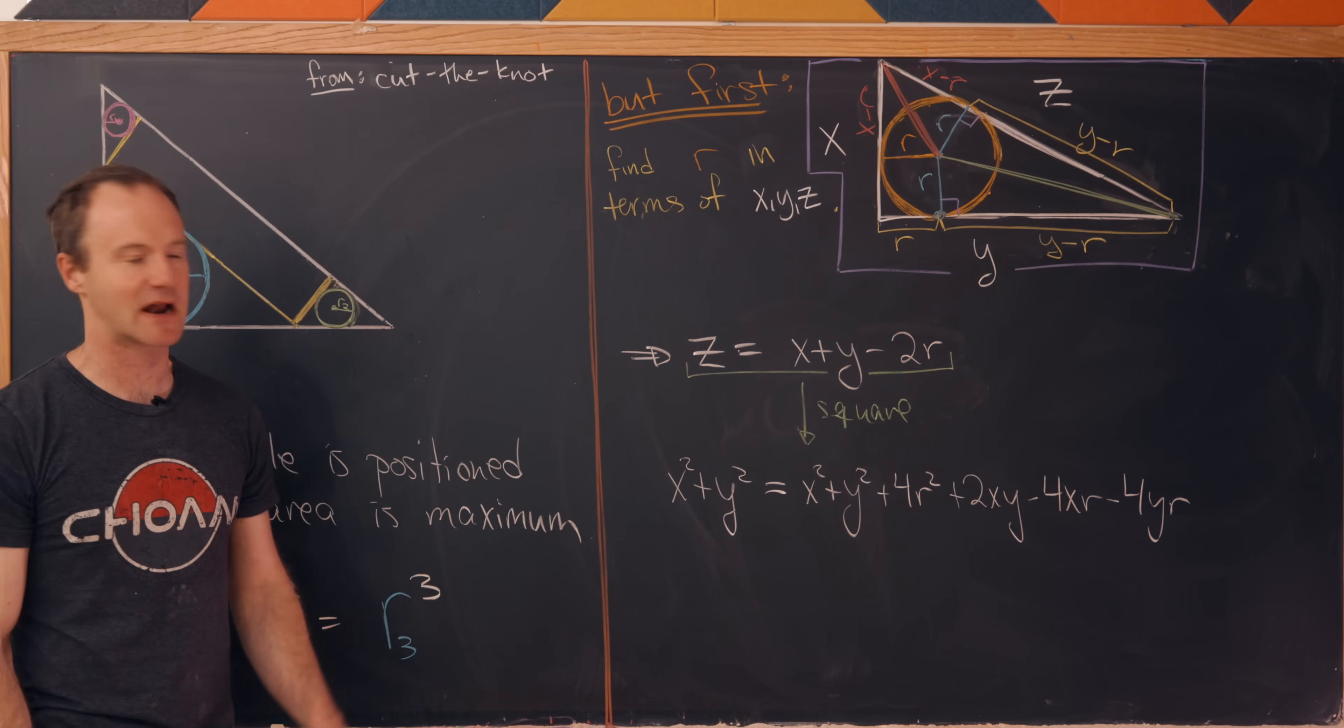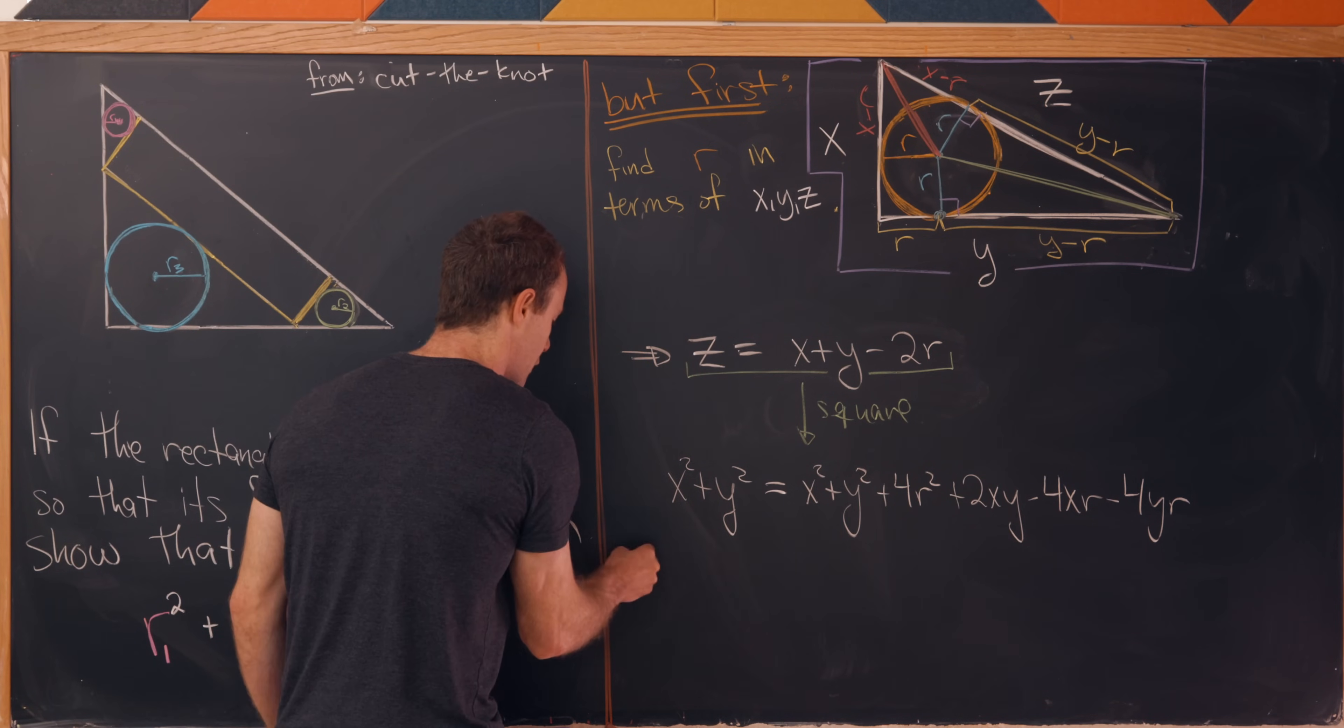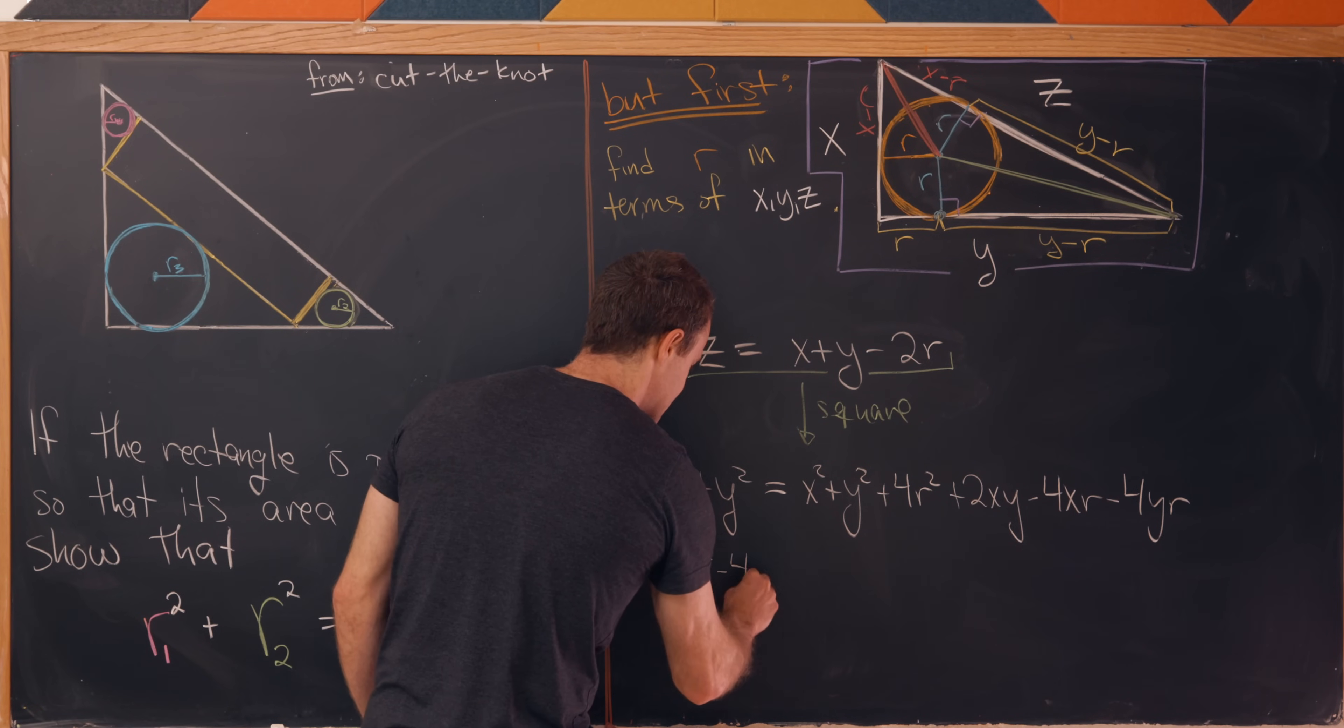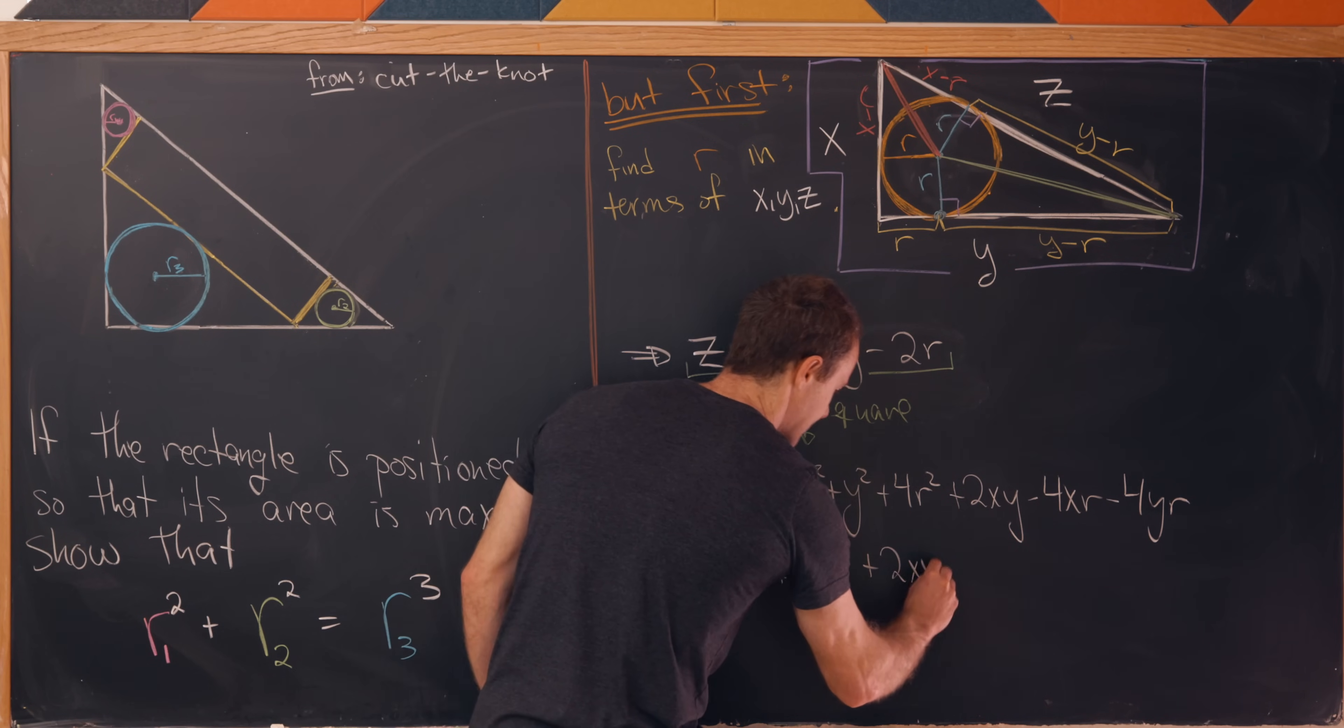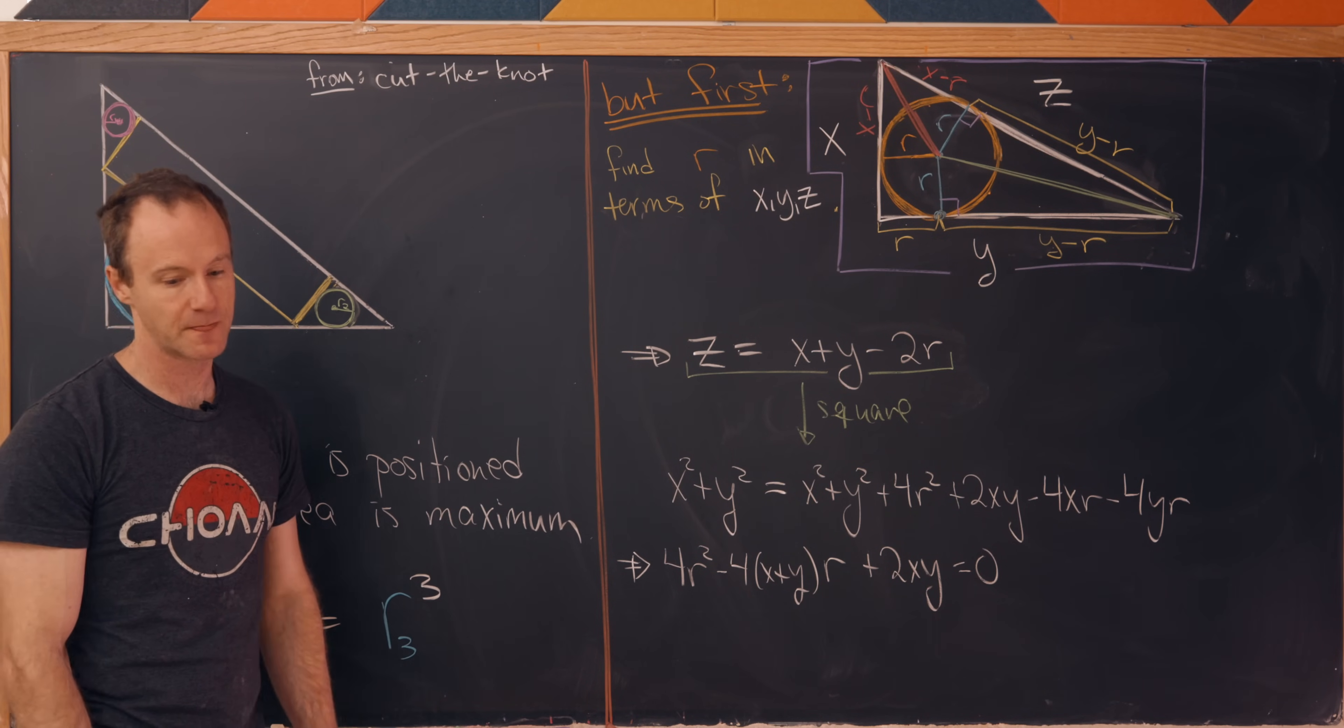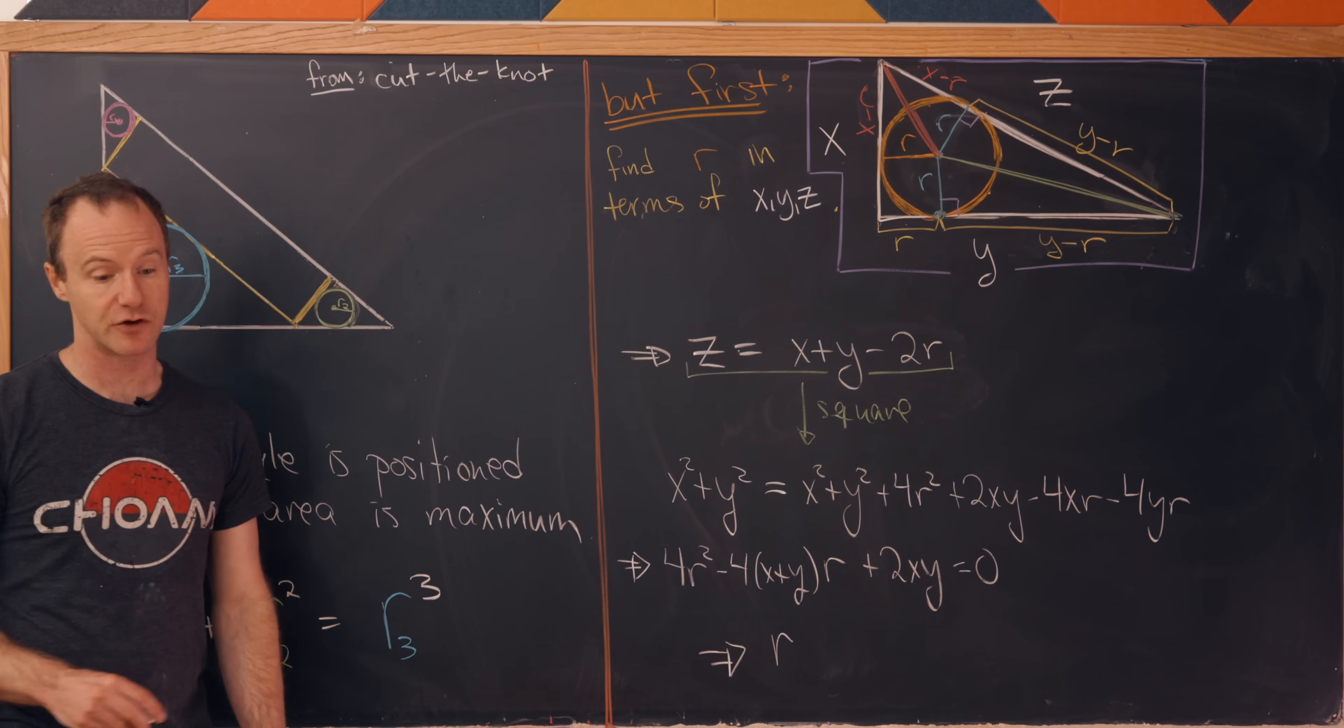The x squared and y squared cancel, giving us a quadratic equation for r: 4r squared minus 4 times (x plus y)r plus 2xy. We can apply the quadratic formula to this.